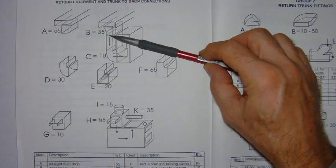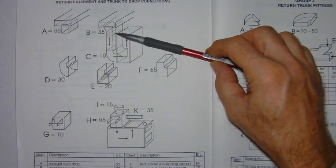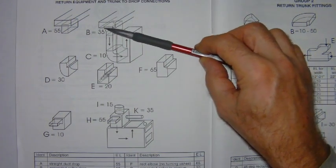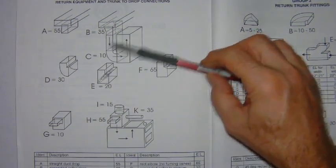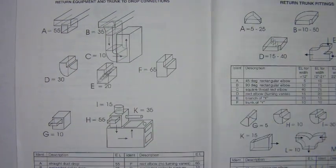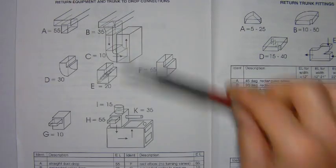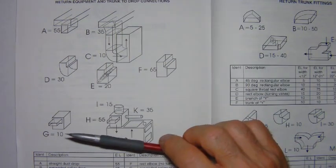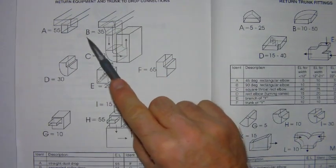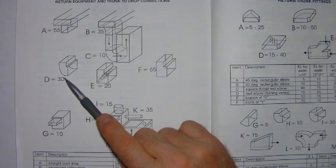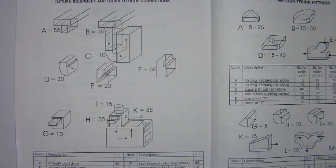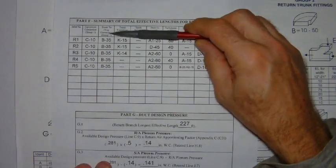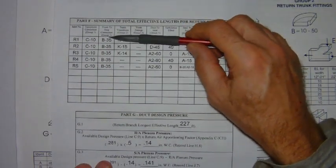And this B fitting is referred to as an expanded collar and you can see it looks a bit like a funnel. It's got a larger area connecting to the duct and it transitions down to the smaller duct size. It simply helps to convey the air from the trunk down into the return drop more effectively. And so that's a B fitting and it's got 35 feet of equivalent length. And so that is our trunk to drop connection B35.